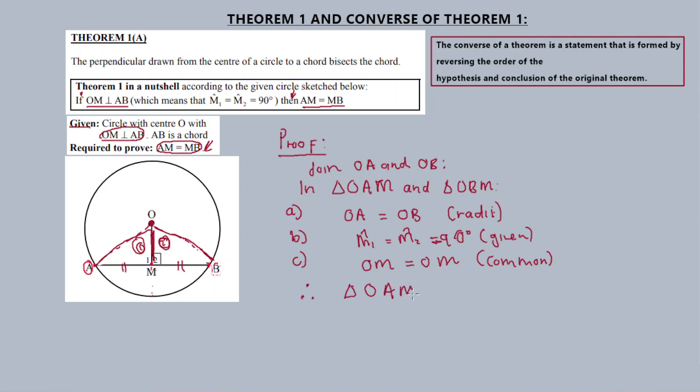Therefore, triangle OAM is congruent to triangle OBM. How do I know this? It's because of a condition of congruence - RHS. I used this condition, RHS, to prove that the triangles are congruent. They are both right angle triangles. Therefore, since they're congruent, it means AM is equal to MB.